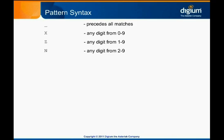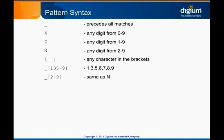In addition to the reserved characters of X, Z, and N, you can express a custom range for matching by using characters and character ranges inside of square brackets. Ranges are specified with a dash between the edges of the range. In this example, 1, 3, 5, 6, 7, 8, and 9 are matched. 2-9 in square brackets would be another way of expressing the same range as the reserved character N. Of course, an underscore must always precede the pattern.